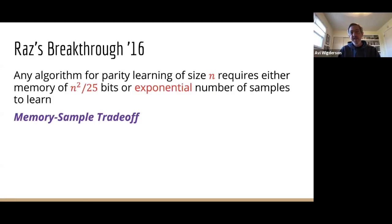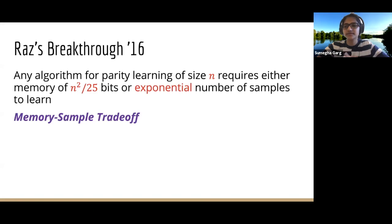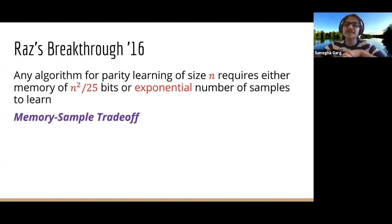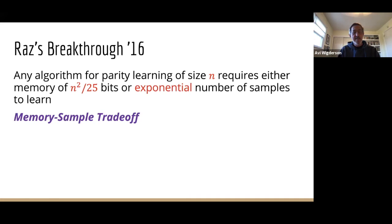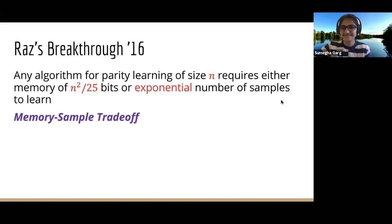The model doesn't restrict it to just linear operations — it can do whatever it wants, as long as it doesn't have too much memory. The only restriction is the memory, with samples arriving in a stream. If you want to remember a sample, you need to store it in your memory, but you can also store any crazy function of your sample, like the logarithm of it truncated to 10 bits.